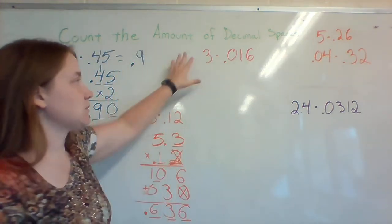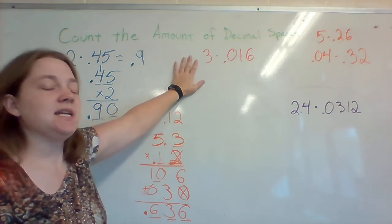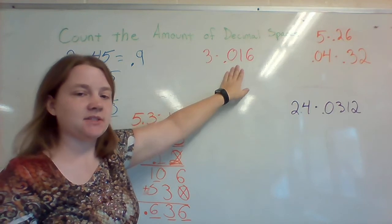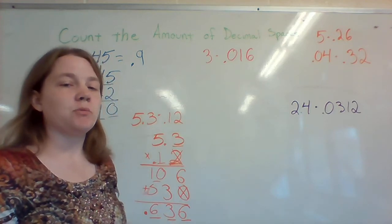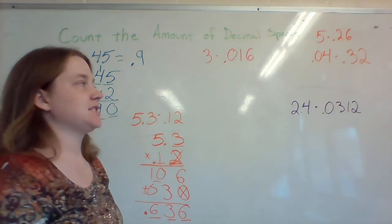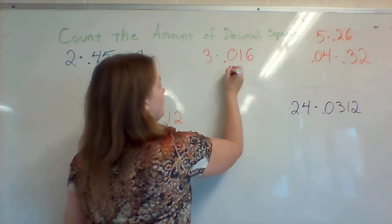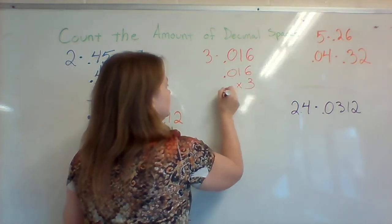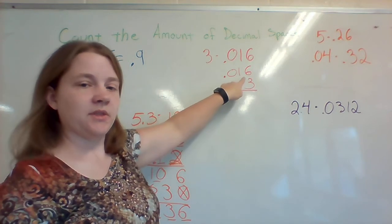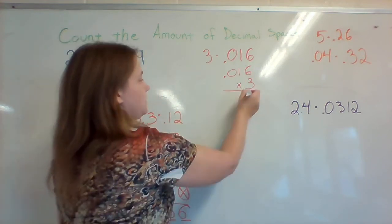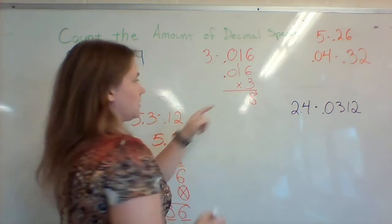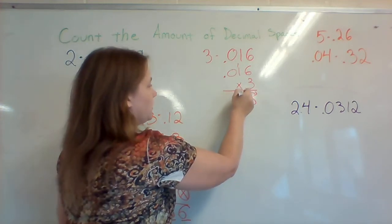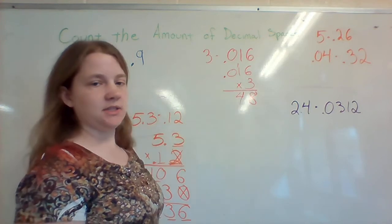My next problem is 3 times 16 thousandths. So to set this up, 16 thousandths is the longer number, so I'm going to put the longer number up top. That way I have less to multiply with. So 3 times 6 is 18. 3 times 1 is 3, plus 1 is 4. 3 times 0 is 0.